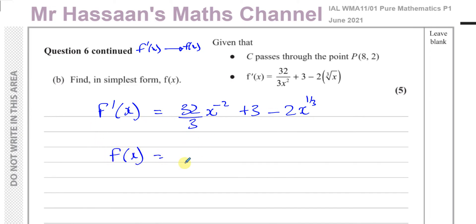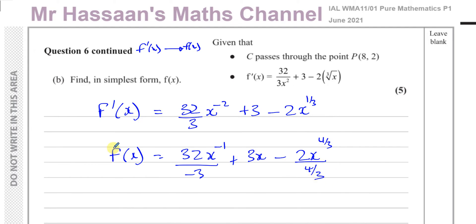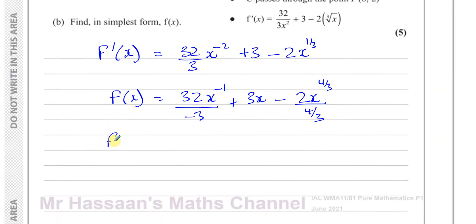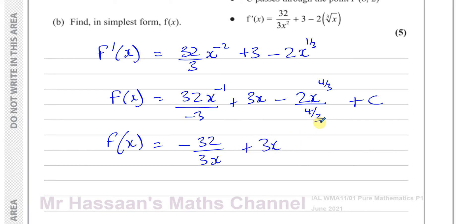Integrating both sides: for 32x^(−2), add 1 to the power to get x^(−1), then divide by the new power (−1) and multiply by 3, giving −32/(3x). The constant term 3 integrates to 3x. For −2x^(1/3), add 1 to get x^(4/3), divide by 4/3, giving −2 × 3/4 × x^(4/3) = −3/2 × x^(4/3). Don't forget the constant of integration +c.